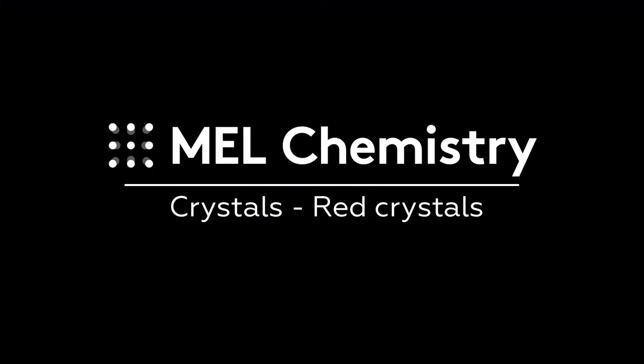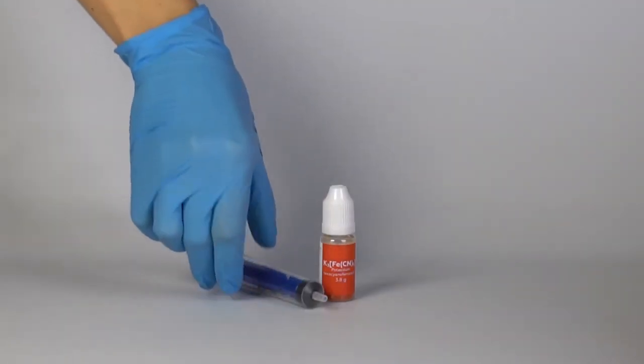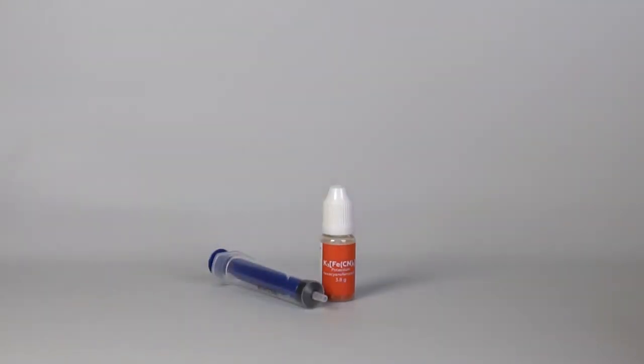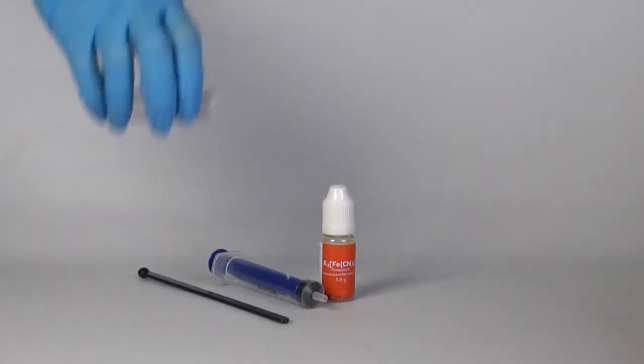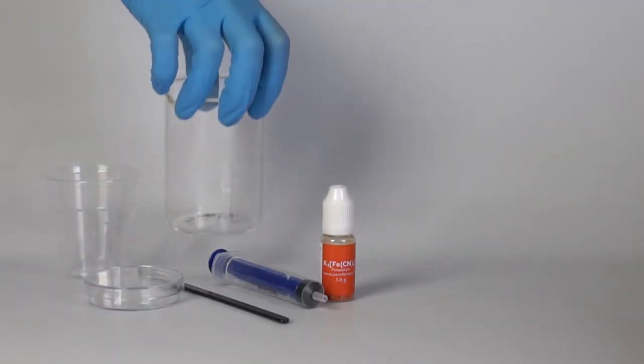For the red crystals experiment, you'll need potassium hexacyanoferrate, a syringe without a needle, a plastic rod, and a Petri dish. From the starter kit, take a disposable cup and a beaker.